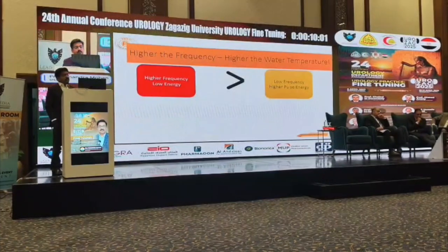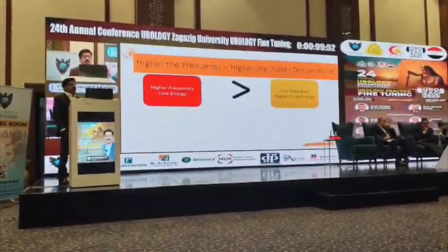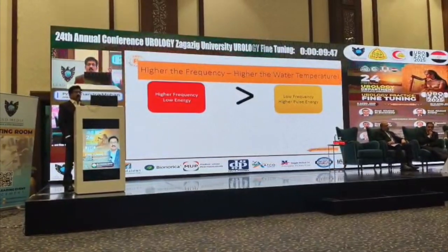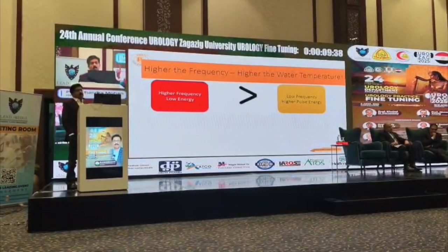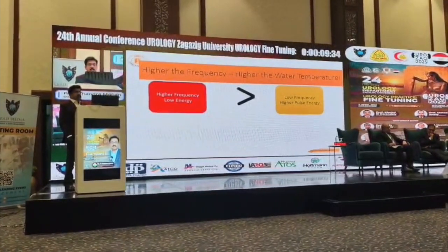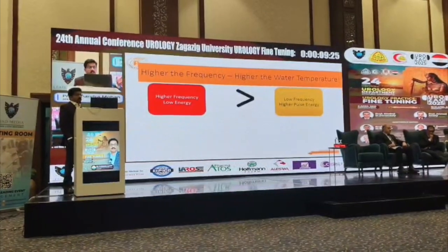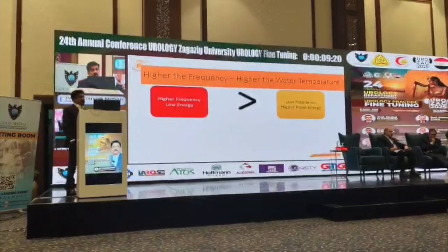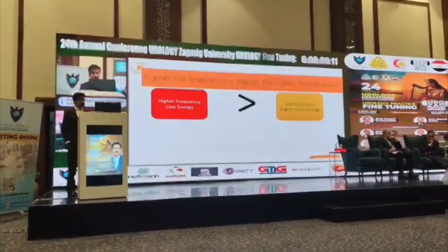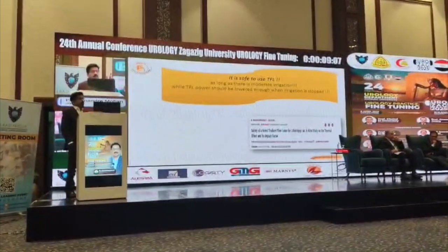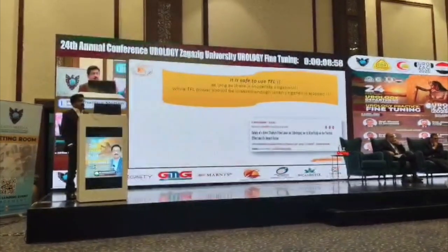Coming to energy and frequency: if you use more energy and more frequency, no doubt temperature will rise. What is normal energy used? One joule. One joule is normal. If you use three joules in the bladder, it is okay, but not in the ureter. Using 100 joules in the ureter is too much. From 10 to 100 is too much. One joule is normal; if you use two or three, it is not normal. That is the main thing. So the majority of the time, it is human error — by touching the laser to the ureter, by keeping high energy, by keeping high frequency, you do the wrong thing.